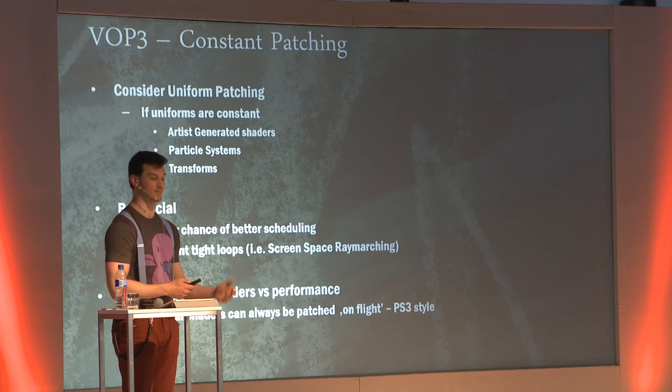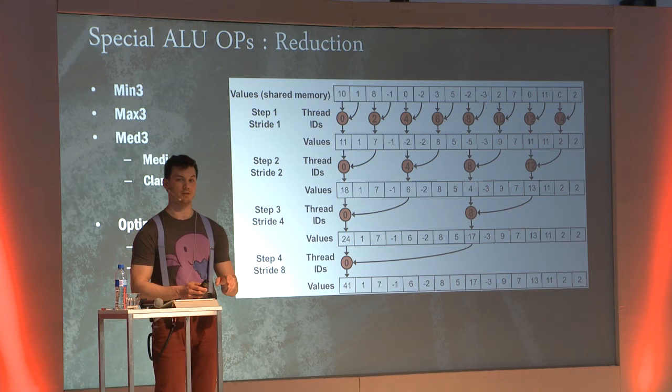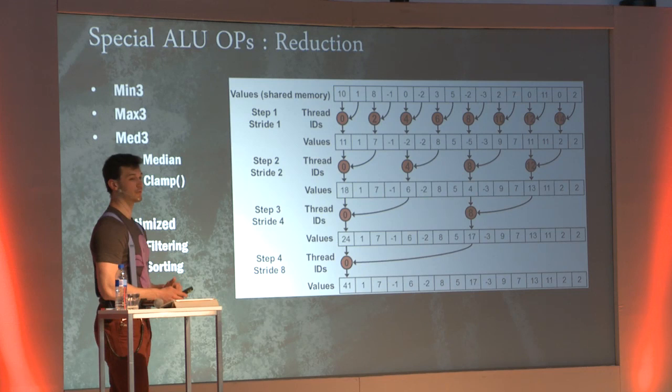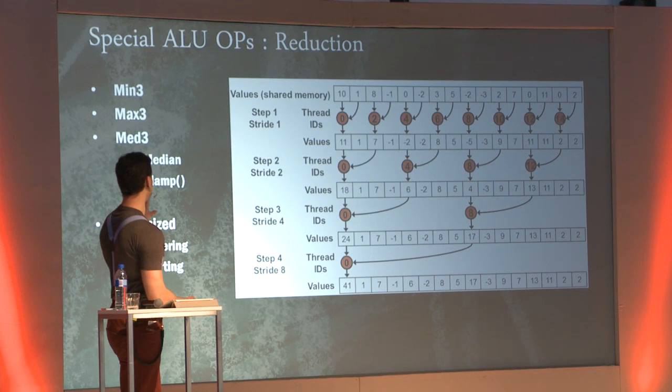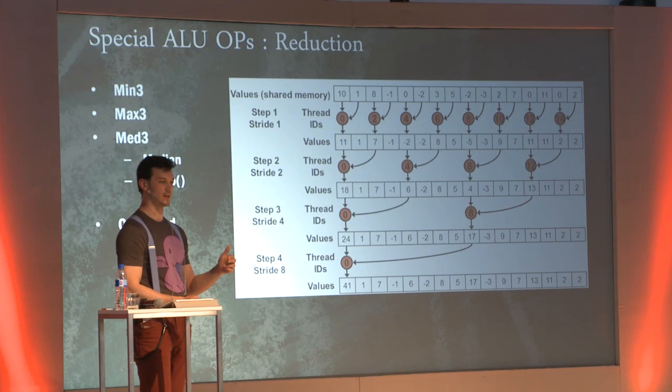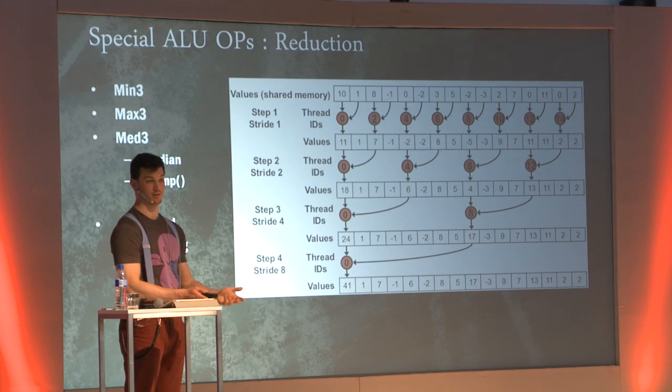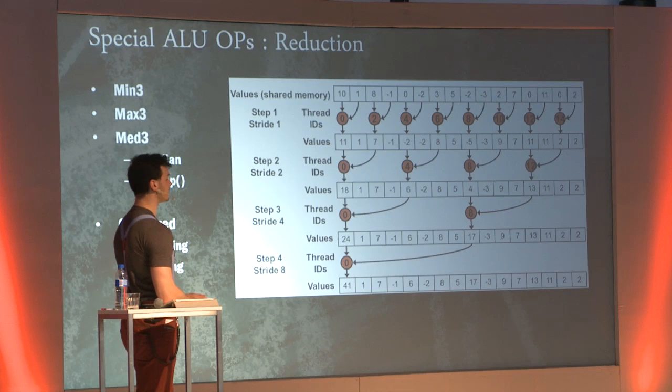GCN also has very nice ternary operations for min, max, and median. Median is essentially a clamp — it takes X, a minimum bound, and a maximum bound and returns the clamped value. It's a single instruction. This is particularly useful in sorting and reduction passes.